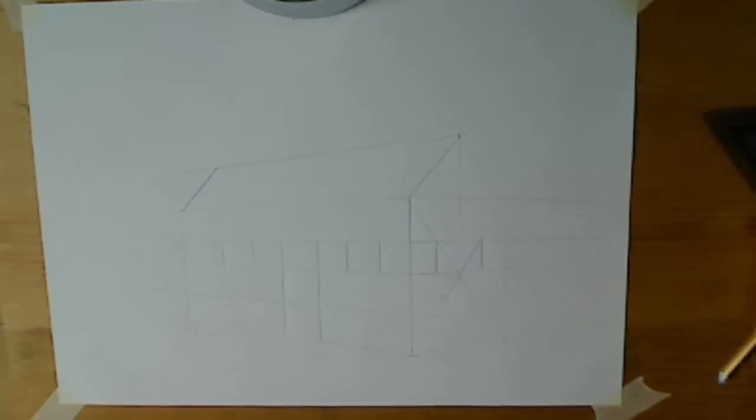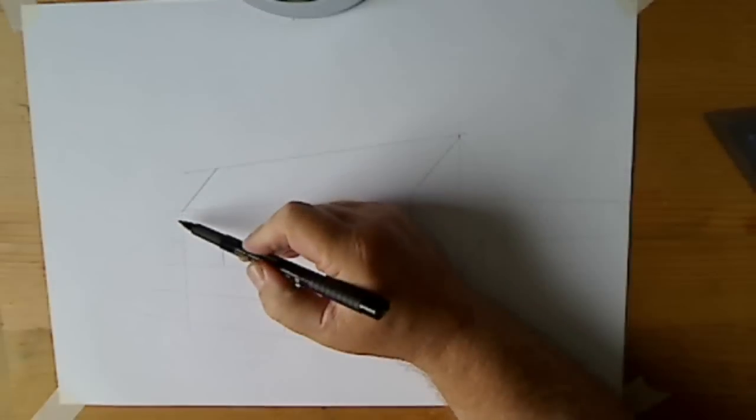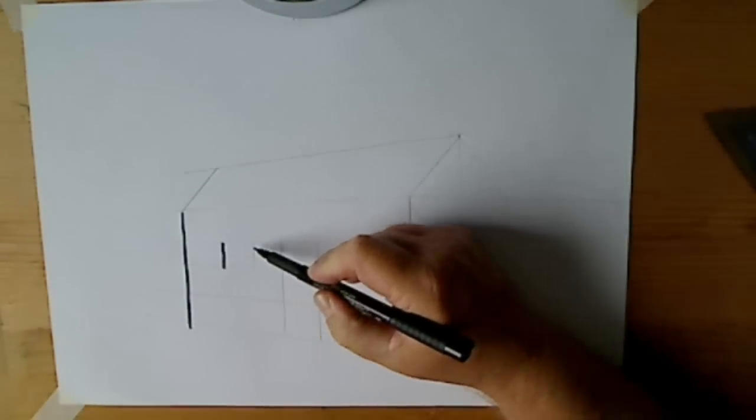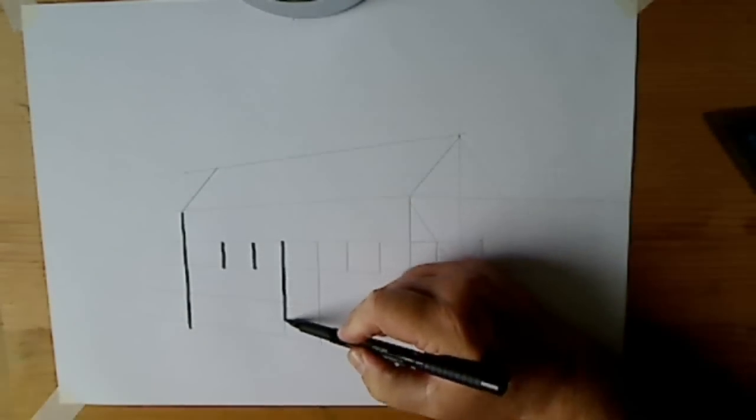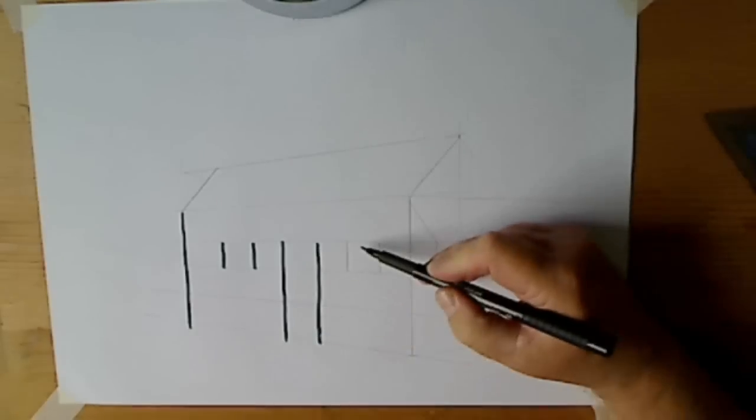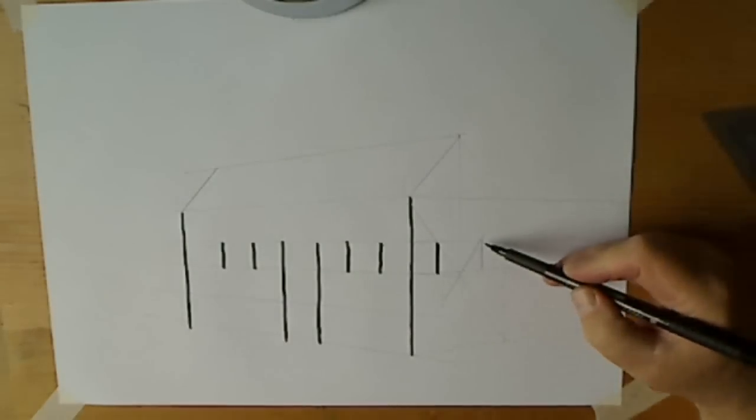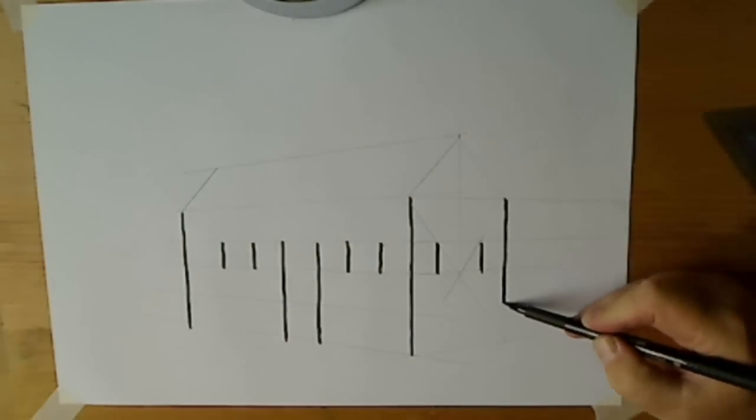Now I've put these lines on my drawing fairly dark because they tend not to come out on the video. But if these were drawn lightly, you could then go over the thing freehand and darken or firm in these lines. And who would know that you'd used the mechanical aid in order to draw the thing.